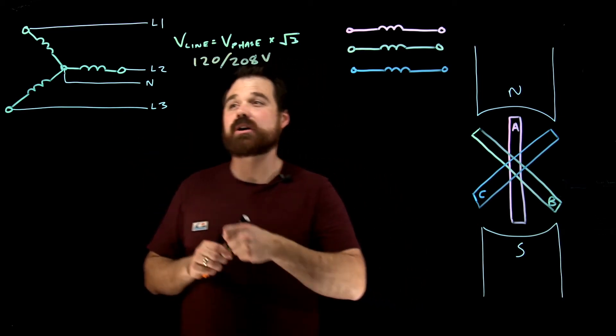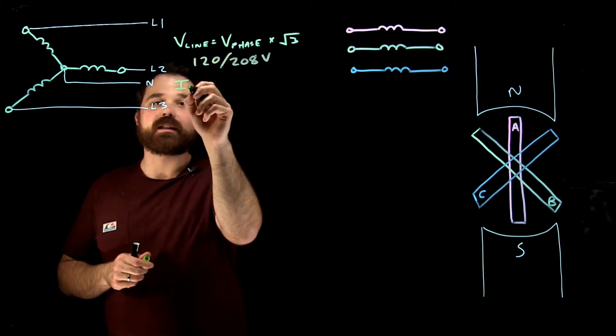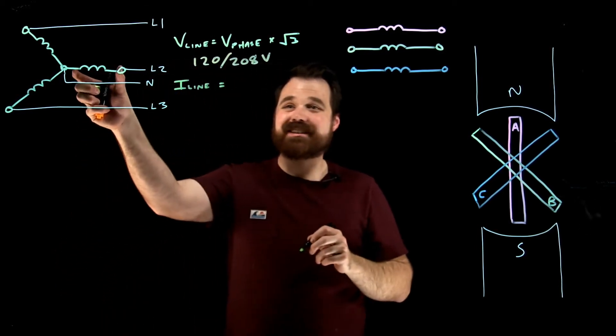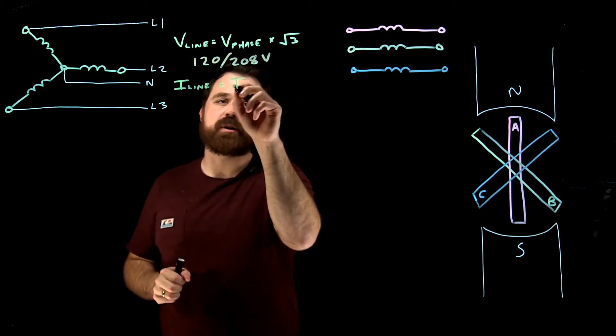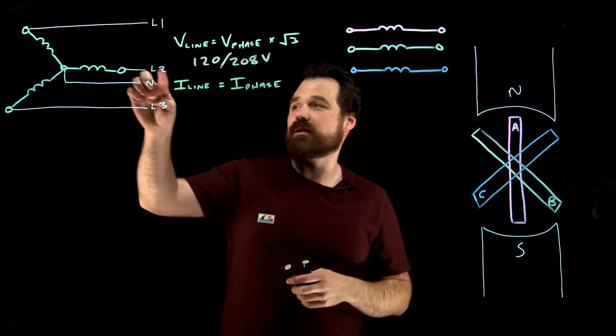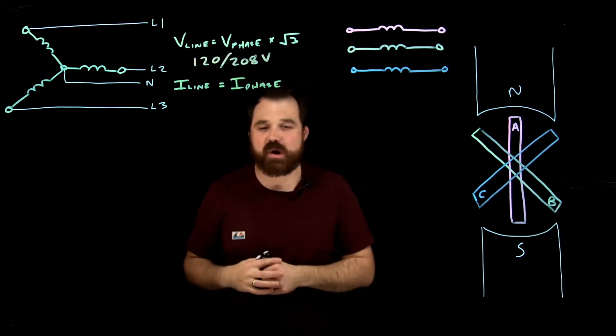And that's the thing that we would want to remember here is our current, our I line, coming out on that line conductor is going to be the same as the current that the phase can put out, so it's often smaller, because those windings end up being in series so they can only put out a small amount of current.